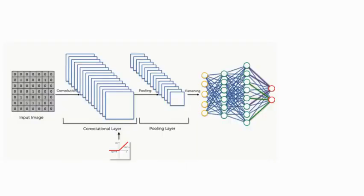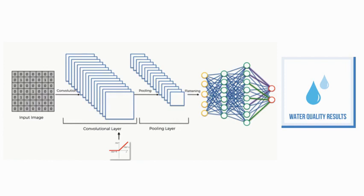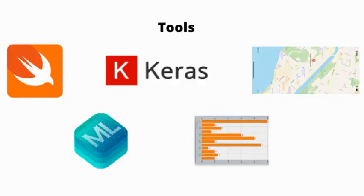MAJI is a mobile application that harnesses the power of deep learning to computationally determine real-time water quality and provide personalized suggestions to people residing in the United States. The mobile application was coded in Swift and includes frameworks such as Charts, MapKit, and Location. It was integrated with a convolutional neural network built with the Keras library and trained on 150 input images.